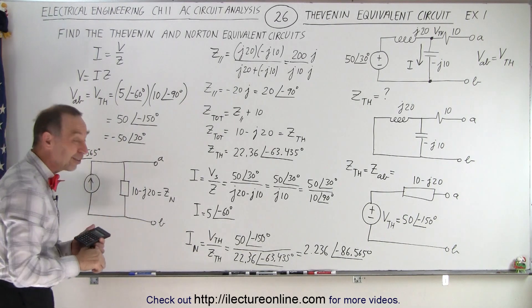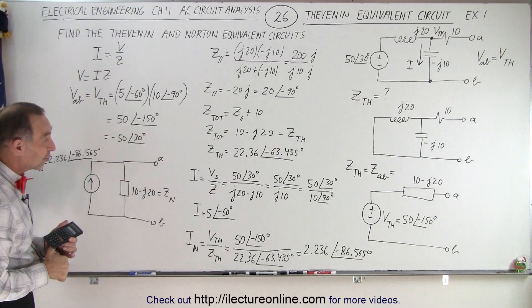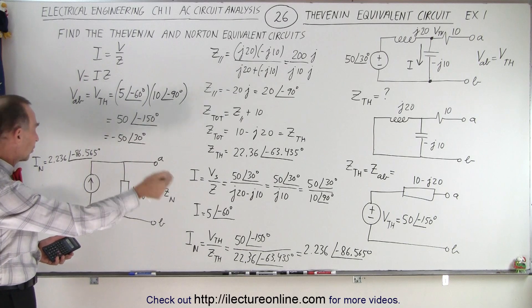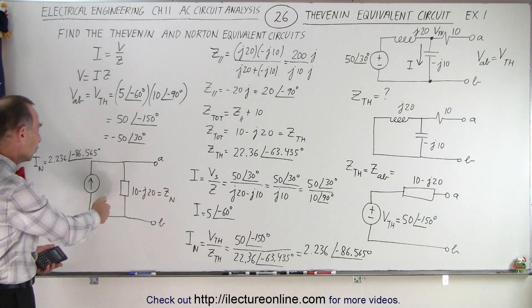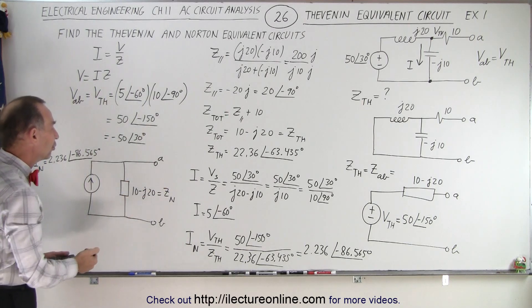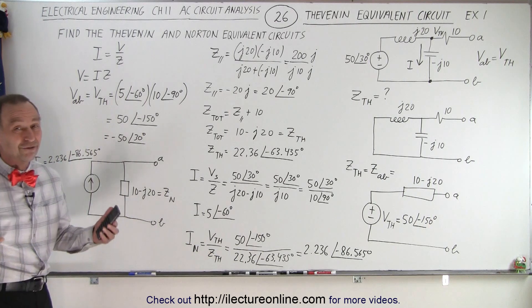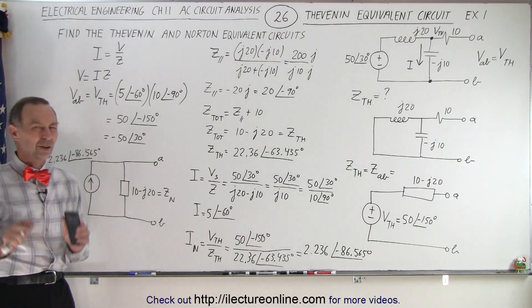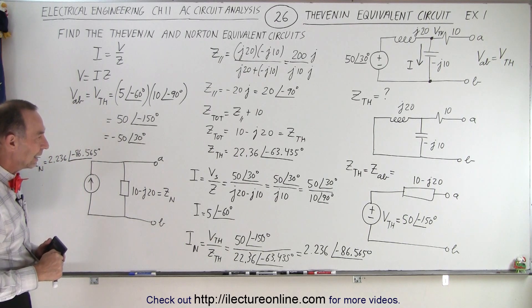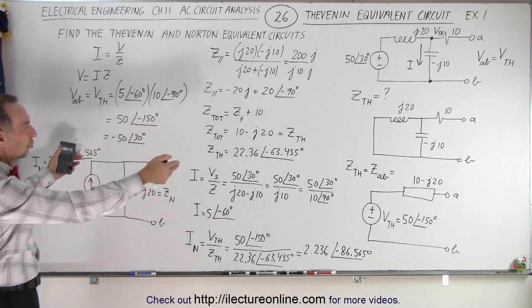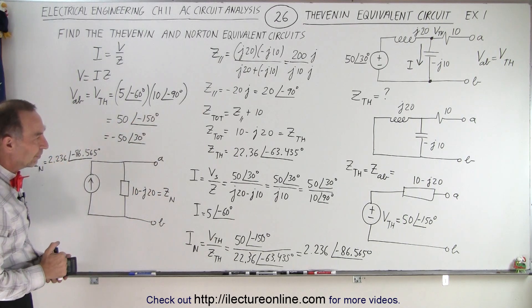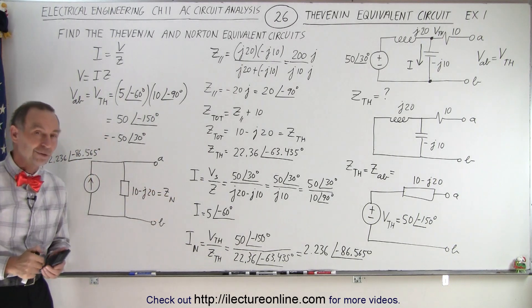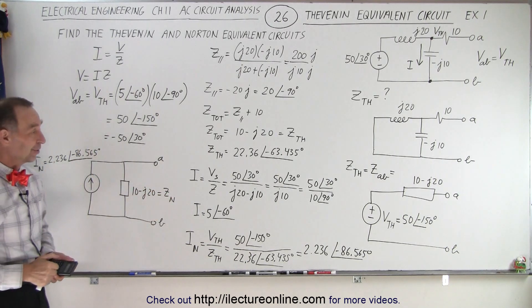With a simple circuit like this, it's fairly easy to find both the Thevenin and Norton equivalent circuits, which then allow you to place a load onto the circuit and easily calculate the current through and voltage across the load. We'll show how to do that in later videos, but this demonstrates how to find both equivalents for a relatively simple circuit.